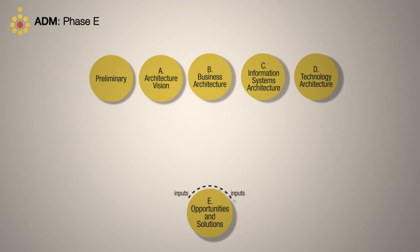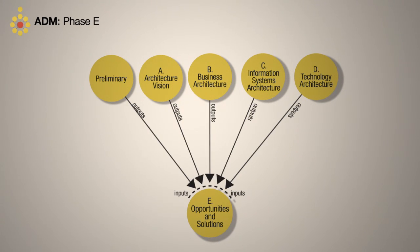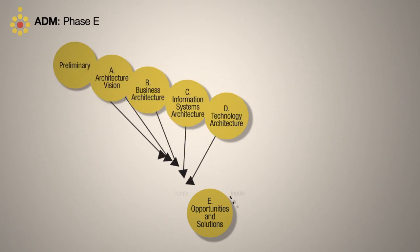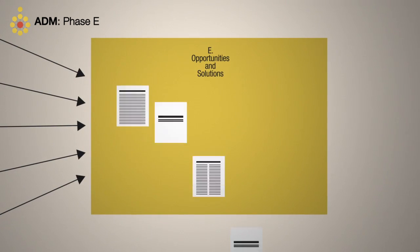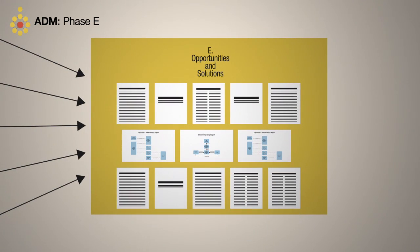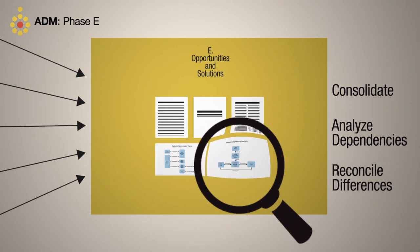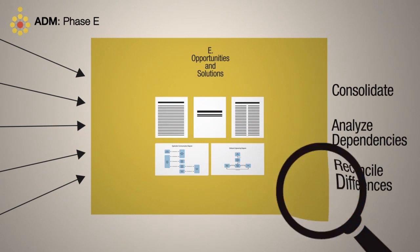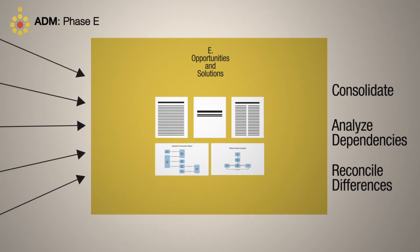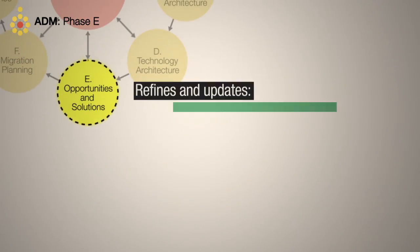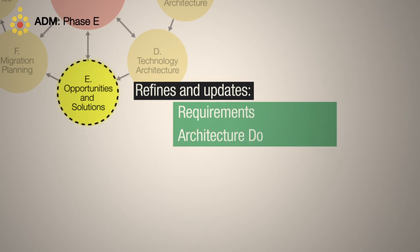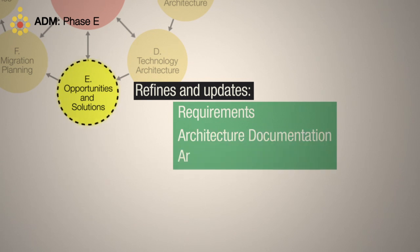The inputs to this phase are pretty much everything that's been output from earlier phases. The steps take these outputs, consolidate them, analyze dependencies and reconcile differences, and confirm again that the organization is able to make the changes. Phase E refines and updates the requirements, architecture documentation, and architecture roadmap.